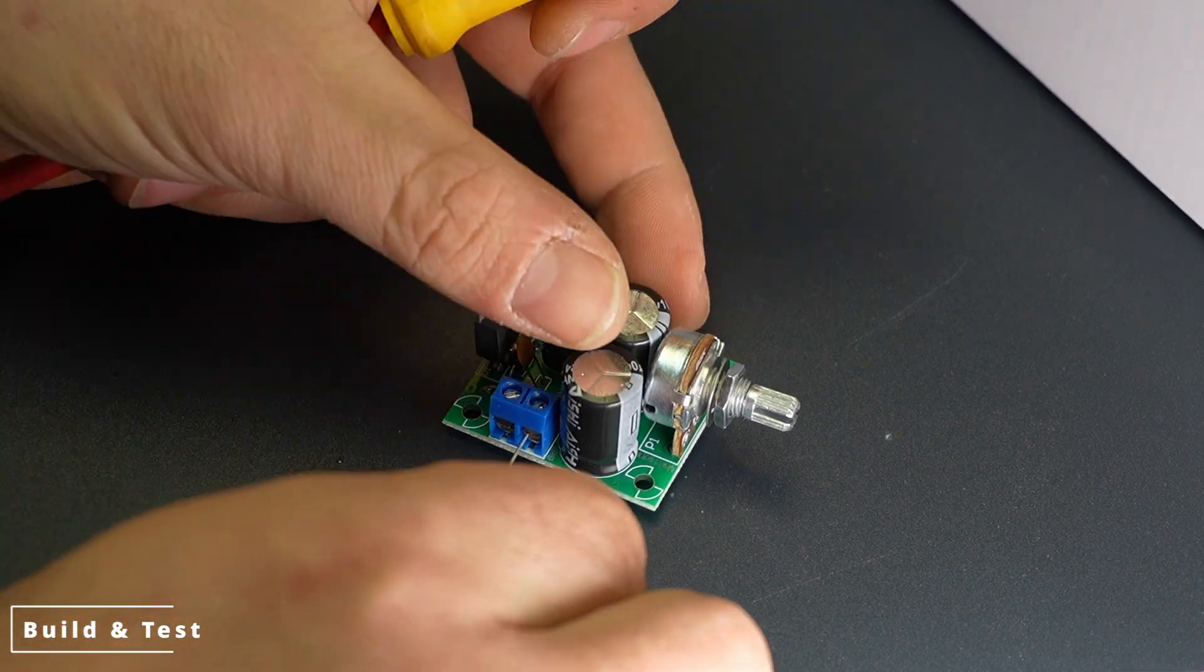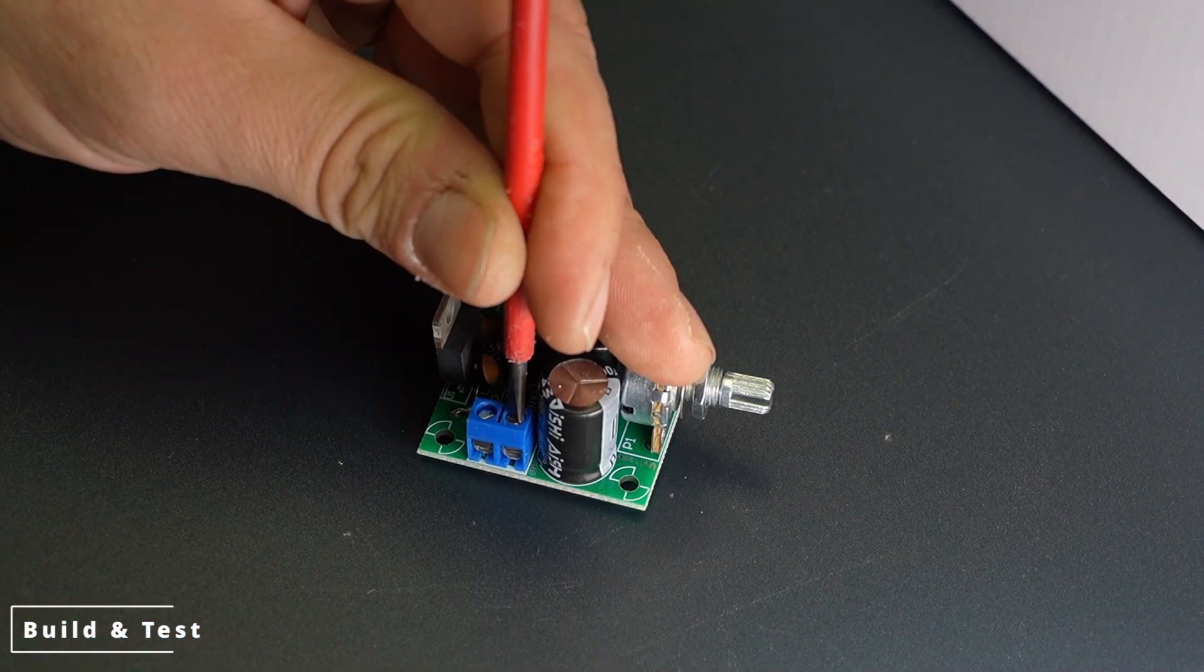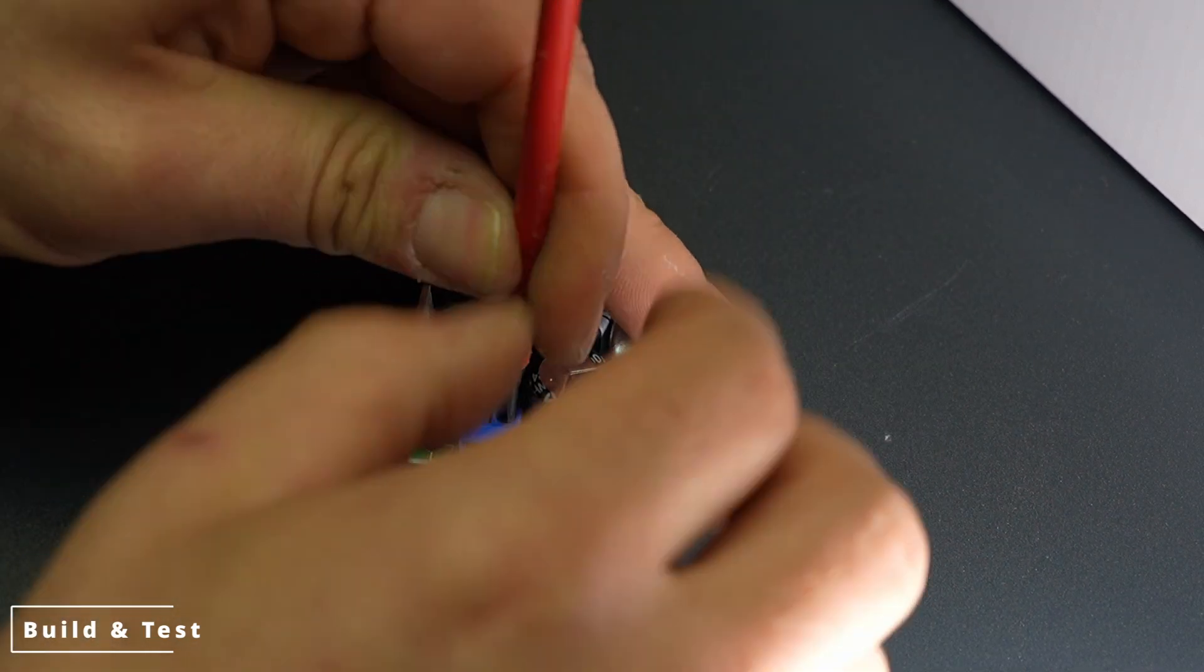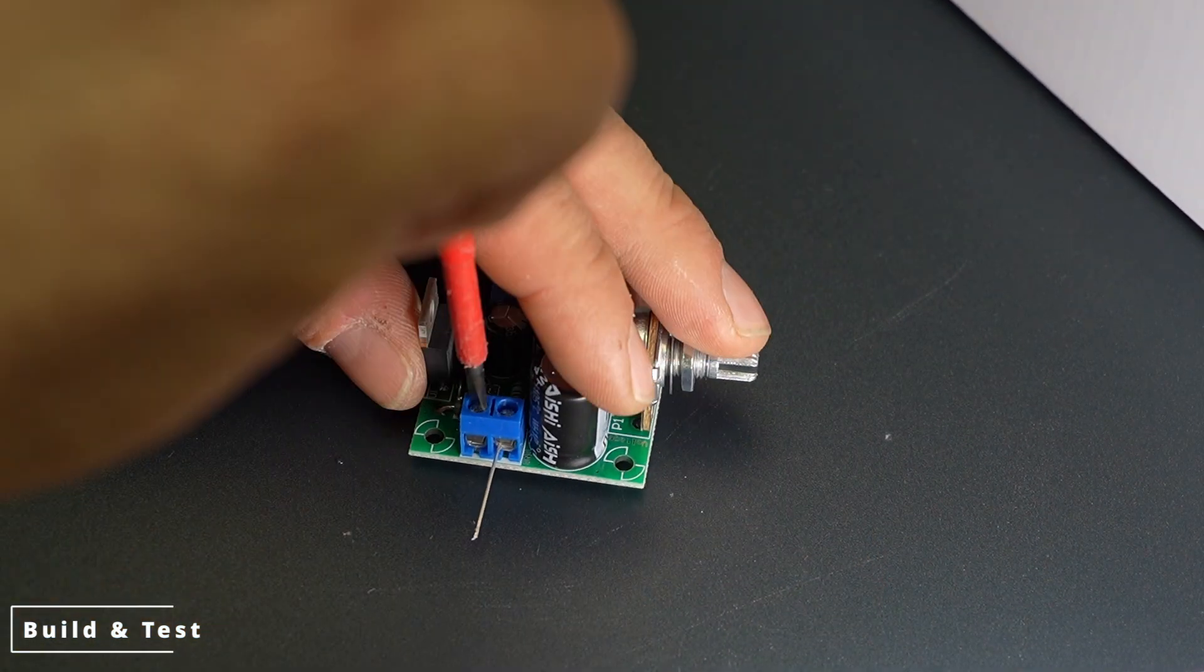Now that we've completed the soldering, it's time to test the power supply. For this, I'll use a bench power supply and a multimeter. The goal is to ensure the circuit functions correctly and that we can adjust the output voltage within the designed range.